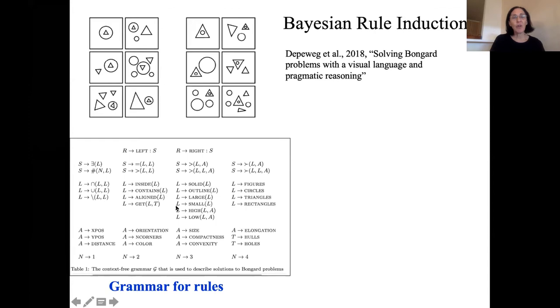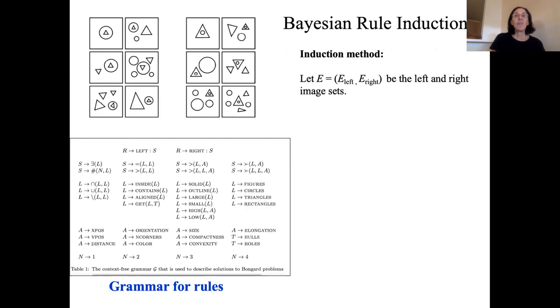I'll show you how they use a grammar to induce a rule. This is written by the authors and then the induction method is: use some kind of computer vision method to extract objects and figure out their shapes and their colors. And then say, we're going to use this Bayesian method where if E is the left and right image sets, G is the grammar, R is a rule. Bayes rule says that the probability of the rule given the grammar and the images can be factored as the probability of the images given the rule times the probability of the rule given the grammar. That's Bayes rule.